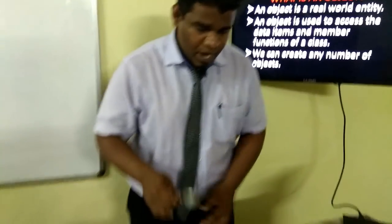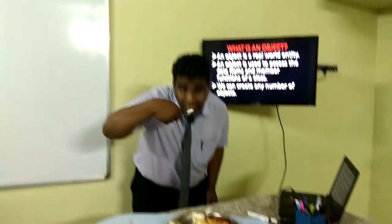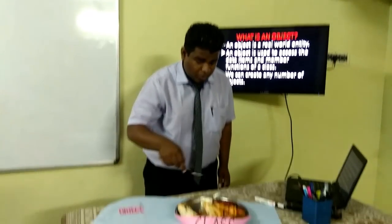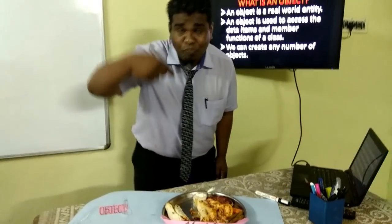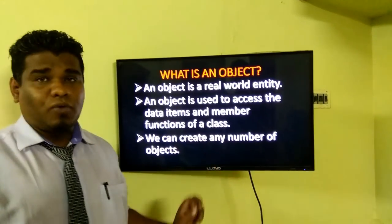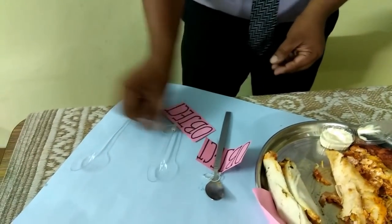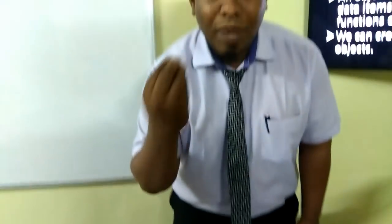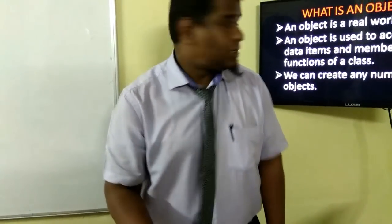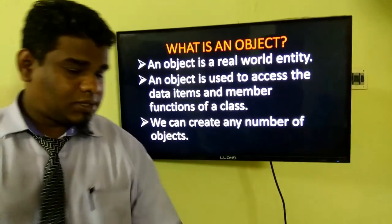With this object — that is the spoon — I can be able to access the mayonnaise and the chicken, which are data members. And the very important concept is: we can create any number of objects. I can have this as an object, or my hand as an object. So an object is used to access the data items — variables and member functions — of a class.